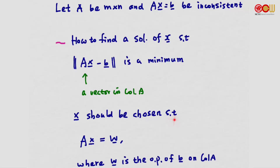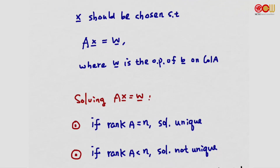x should be chosen such that Ax equals w, the orthogonal projection of b onto the column space of A. Because w is the orthogonal projection of b on the column space of A, the equation Ax equals w is always consistent.